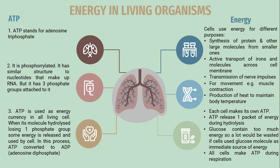Cells use energy for different purposes: synthesis of proteins and other large molecules from smaller ones; active transport of ions and molecules across cell membranes; transmission of nerve impulses; movement such as muscle contraction; and production of heat to maintain body temperature. Each cell makes its own ATP. ATP releases one packet of energy during hydrolysis. Glucose contains too much energy, so a lot would be wasted if cells used the glucose molecule as an immediate source of energy.